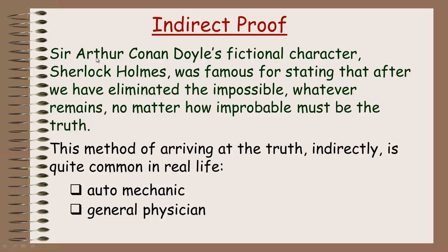Sir Arthur Conan Doyle's fictional character Sherlock Holmes was very famous for saying that after we have eliminated the impossible, whatever remains, no matter how improbable, must be the truth. This idea of proving something by eliminating possibilities is really what indirect proof is all about.